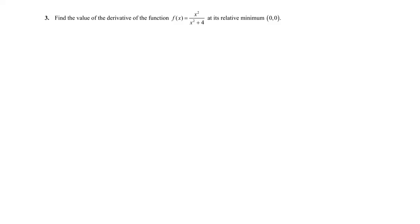Problem 3 says find the value of the derivative — the slope — at the point (0, 1.4). The value of the function at x equals 0 is 1.4, but that is not what's being asked. What we need to find is the slope at that point — whether the function is flat, rising, or falling there.